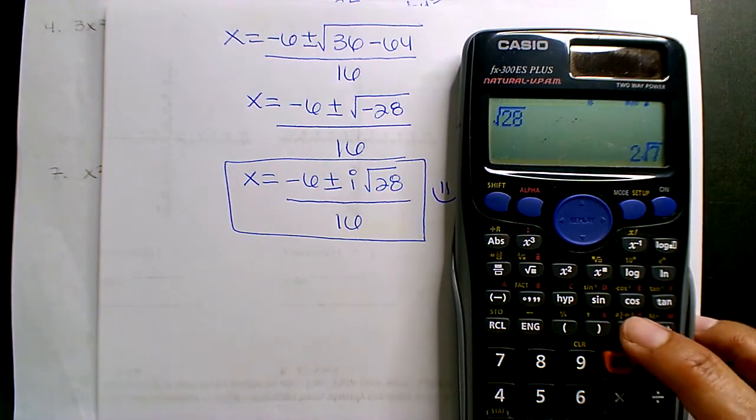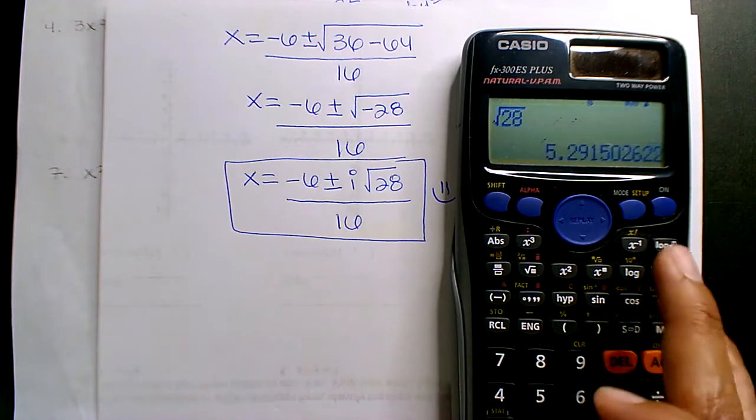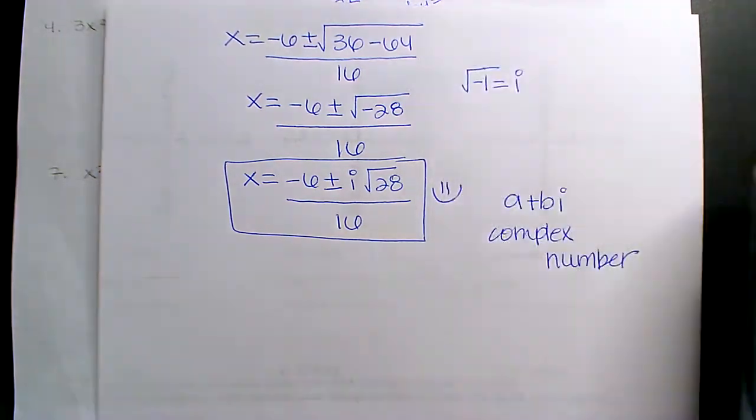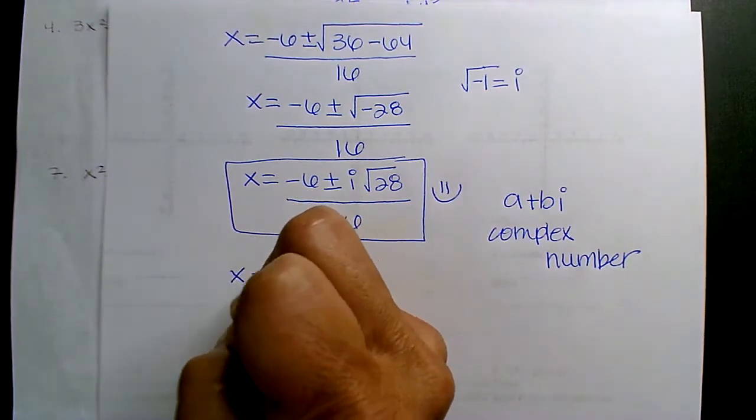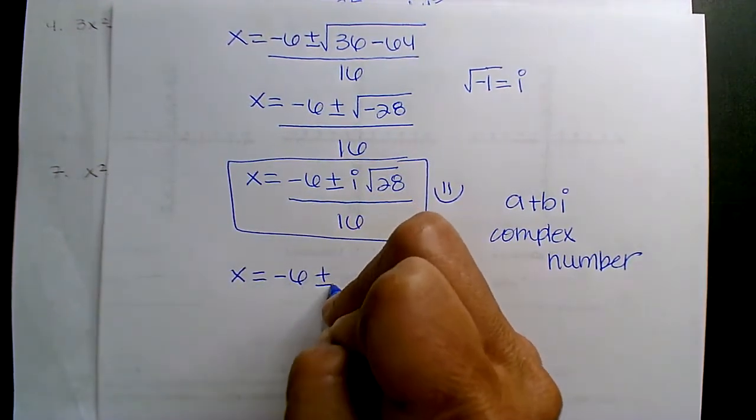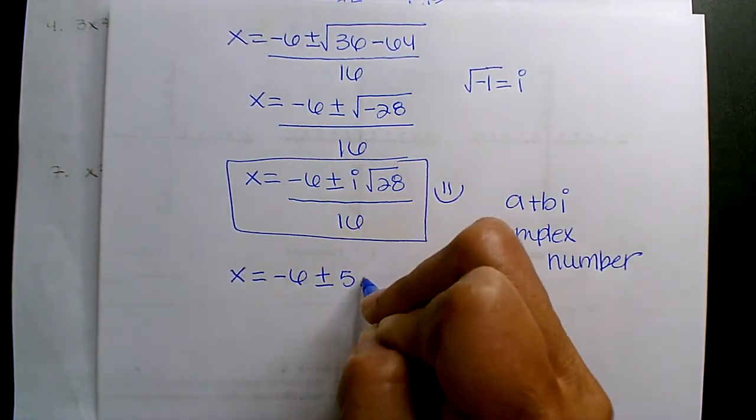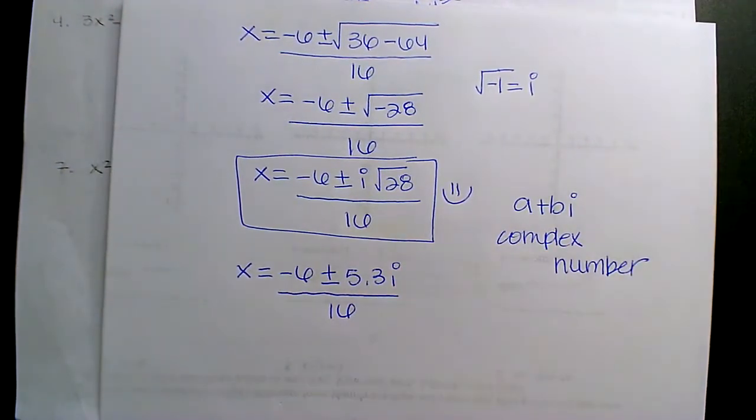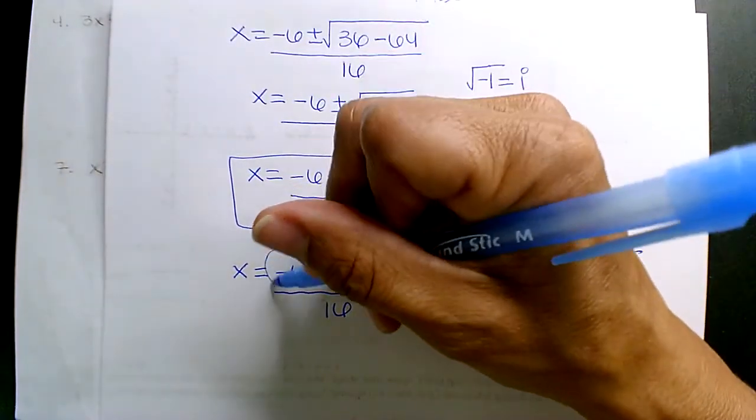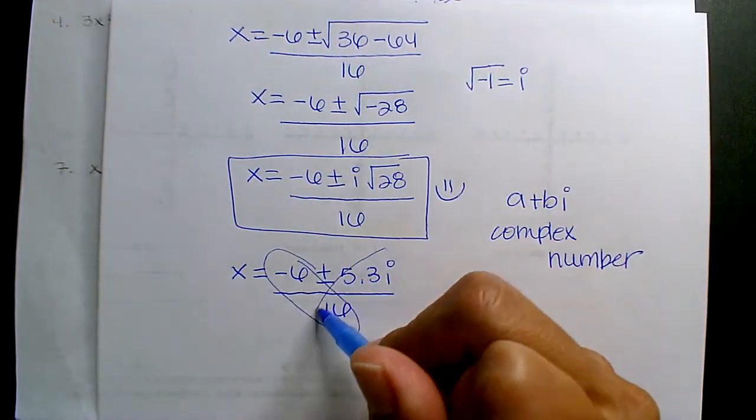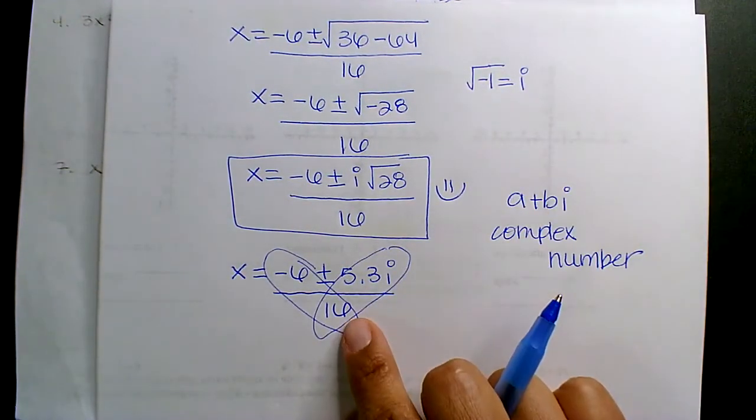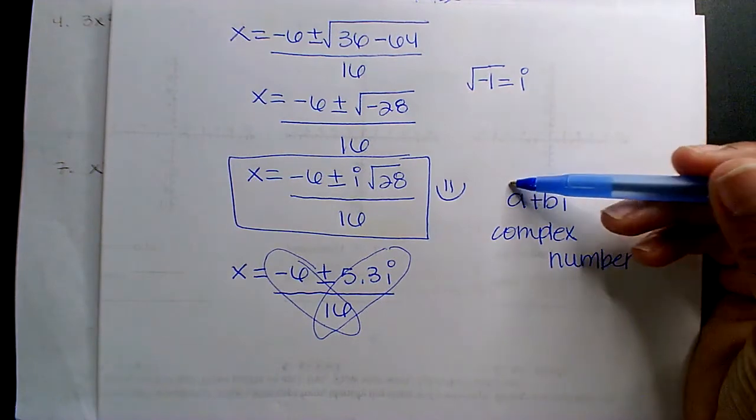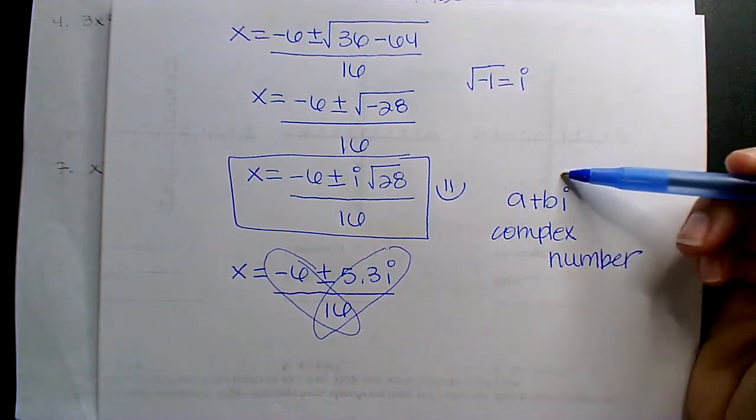So you get negative 6 plus or minus 5.3i - that's your imaginary - and now you have 16. Now you want to break up that one fraction into two separate - you want your real component and you want your imaginary component.